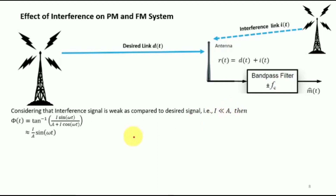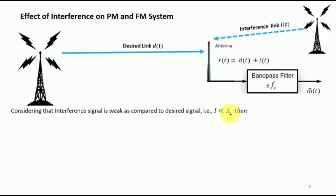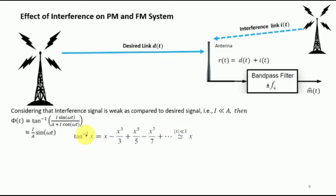Under the assumption that A >> i, the phase φ(t) can be simplified. This follows from the approximation that tan⁻¹(x) ≈ x when x << 1, which is valid when i << A. So φ(t) simplifies to (i/A)·sin(ωt), and since i is very small we ignore higher-order terms.